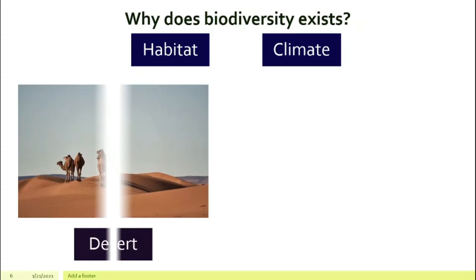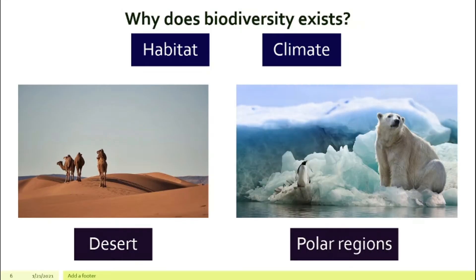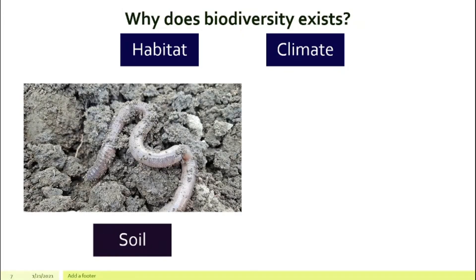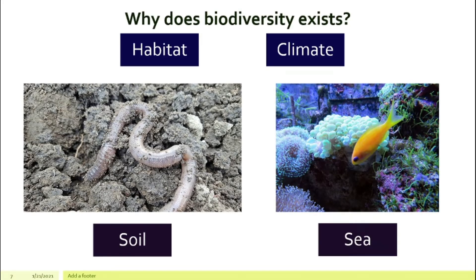For example number one, in the desert, you can normally find camel. Secondly, in polar regions where it is really cold, you will find polar bear and penguin. Polar bear and penguin cannot live in the desert and the camel cannot live in the polar regions. How about in the very wet soil? Normally you will find earthworm. How about under the sea? You will find many different fishes, and they cannot switch places because of the habitat and climate that is so different.